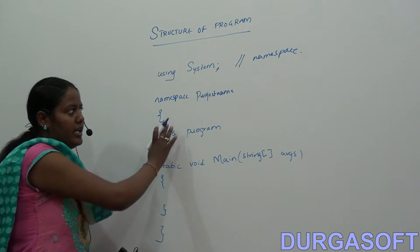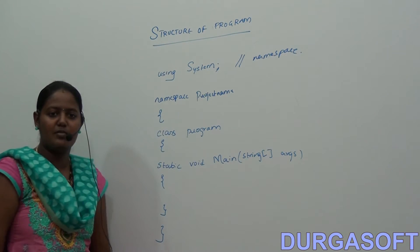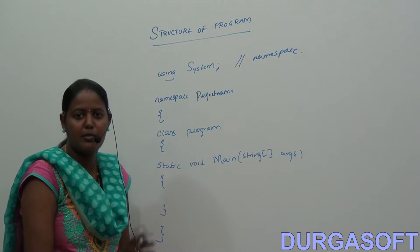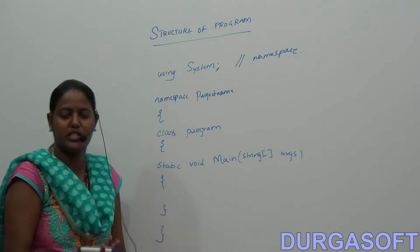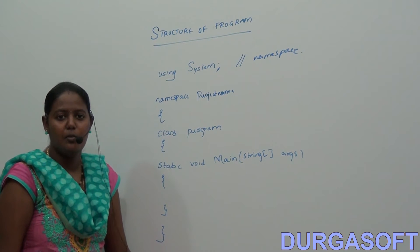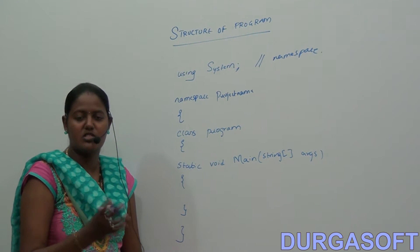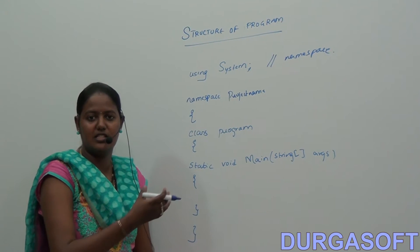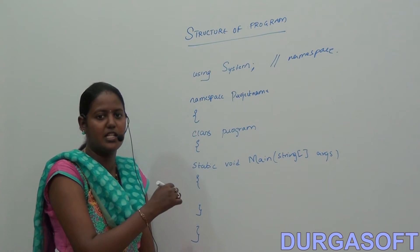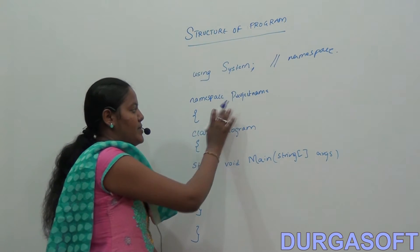Next one is the namespace name, which is nothing but our project name. The namespace name will be our project name, which is going to access the classes and methods present in the namespace.